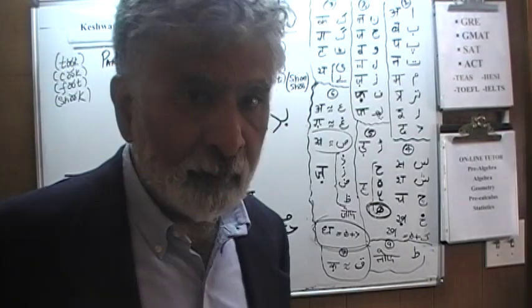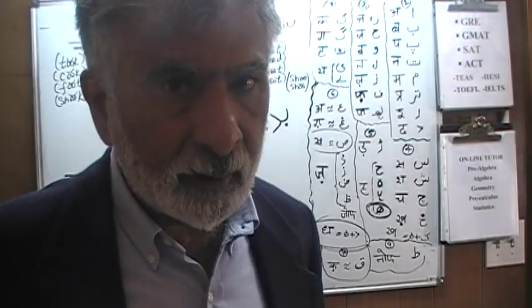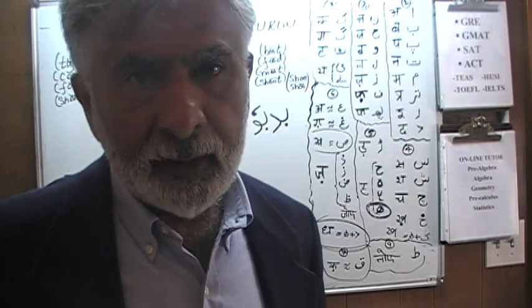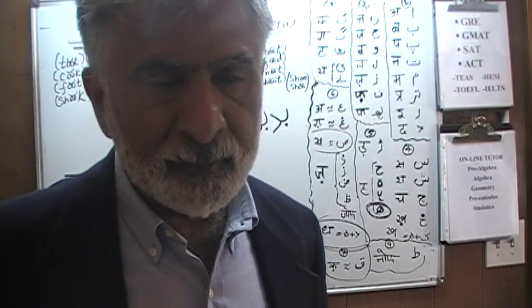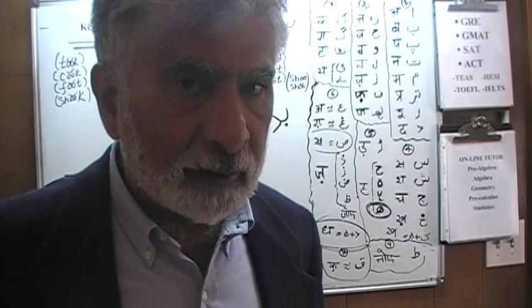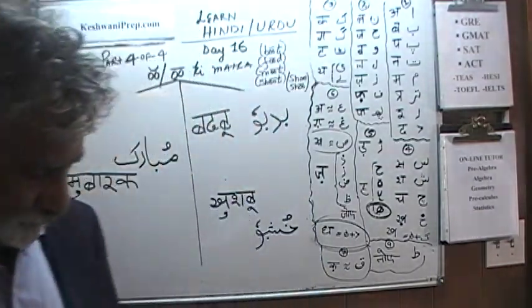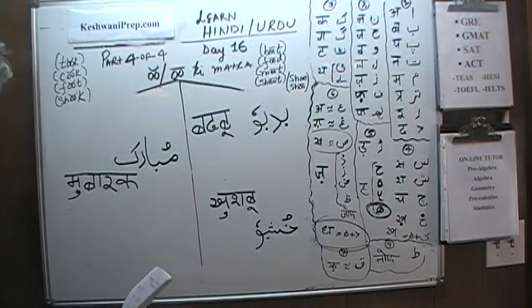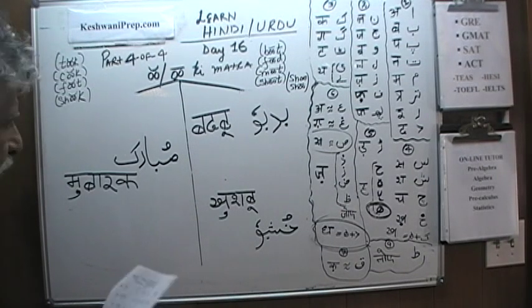'Saal Gira Mubarak' means Happy Birthday — that's how we say happy birthday in Urdu. Saal Gira means birthday. We also did Khushbu and Badbu.